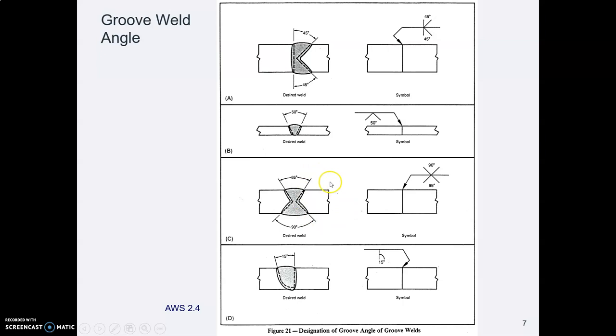In the third example they are showing us how you can have a different angle on each side. Notice carefully, 65 degrees is the angle on the top side of the plate. That's the arrow side of the plate which is the symbol underneath the arrow. So the 65 degrees went under the arrow indicating arrow side. The 90 degree angle was on the far side and so they have put the 90 degree callout above the leader line meaning far side.